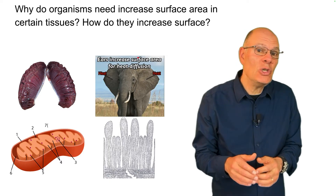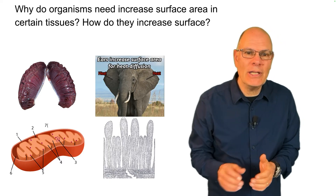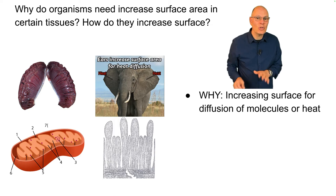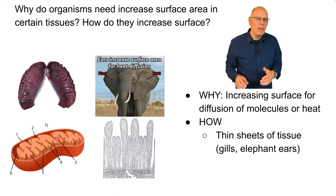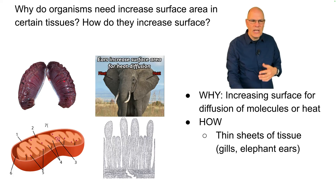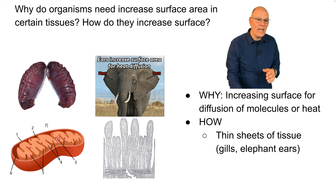Why do organisms need to increase surface area in certain tissues, and how do they do that? The why is in order to increase the surface for diffusion of molecules or heat. How? You can have thin sheets of tissue, like these thin sheets that make up the gills of a fish that have been dissected out — that's for increasing the intake of oxygen and the diffusion out of carbon dioxide.